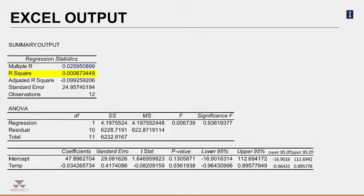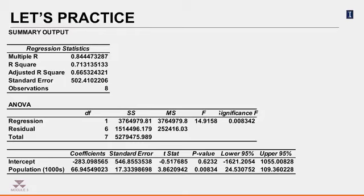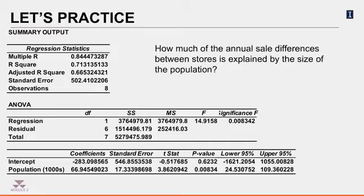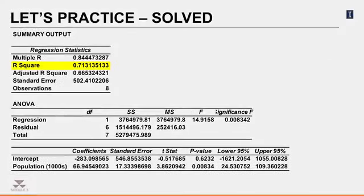Now let's practice. This is the output for the example we used in the previous lesson, effect of population and annual sales. What is your opinion of this regression model? How much of the annual sale differences between stores is explained by the size of the population living near the stores and how much by other things? R squared here is 0.7131. So about 71% of annual sales can be explained by the population living near that store's location. So this is a very good model. However, there are other sources of variations and collectively they explain about 29% of the variations.